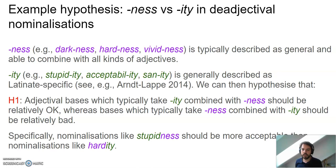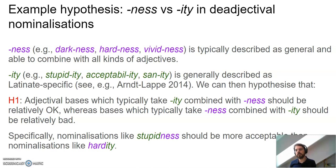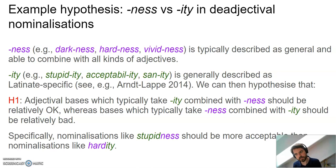If speakers really know this — that -ity has some special Latin-origin feature whereas -ness is general — that allows us to formulate some hypotheses. Hypothesis one: if you take a word which typically has -ity and instead put -ness, you should get a relatively acceptable word. But if you take a word that typically takes -ness and put -ity instead, the result should be relatively bad, because you've combined something not marked as Latin with the Latin affix. Specifically, stupidness should be more acceptable than hardity.